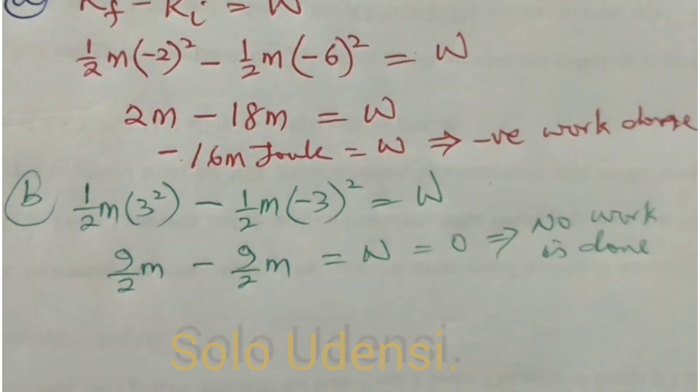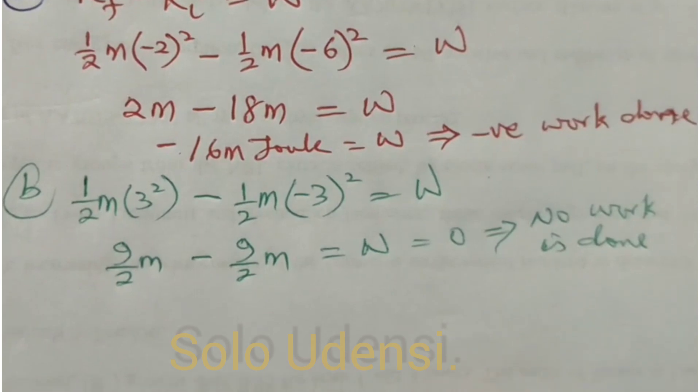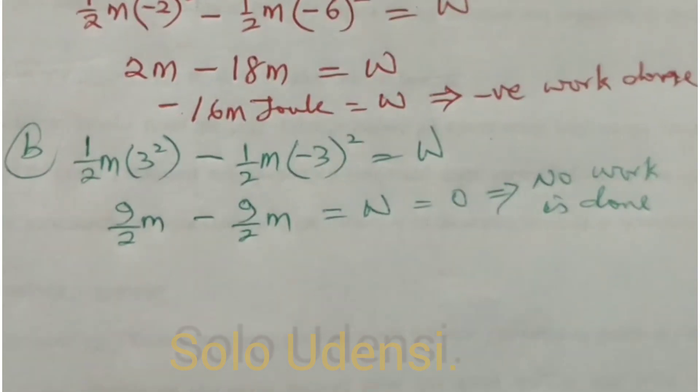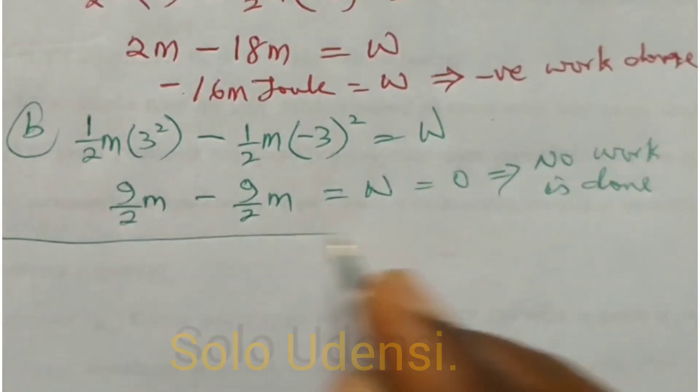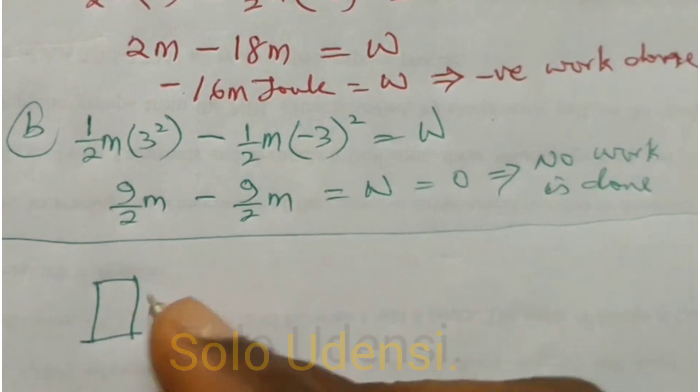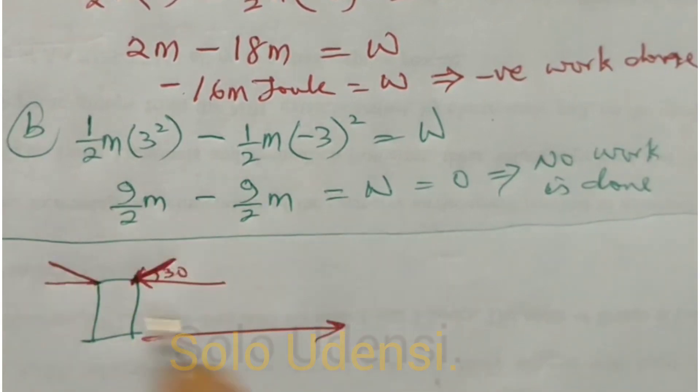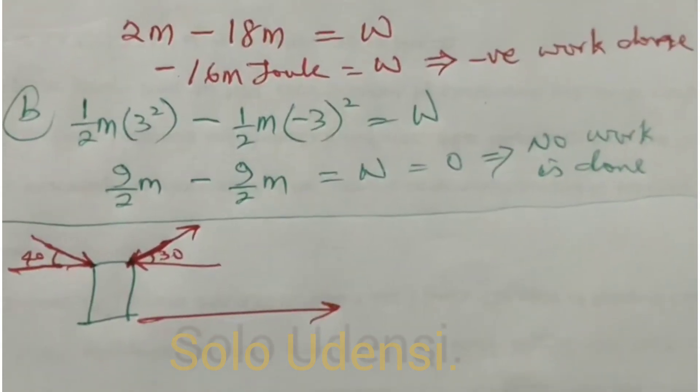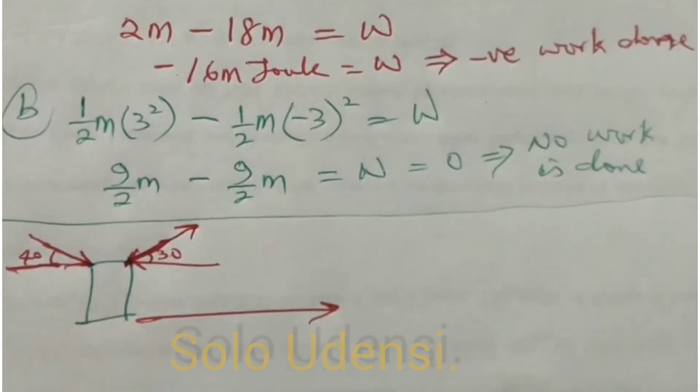There can be another scenario where you are pushing a fridge in your house. Two people pushing it, one person pulling it this way and this one is pushing it at an angle to the horizontal 40 degrees. You can be asked to find the total work done on this fridge.